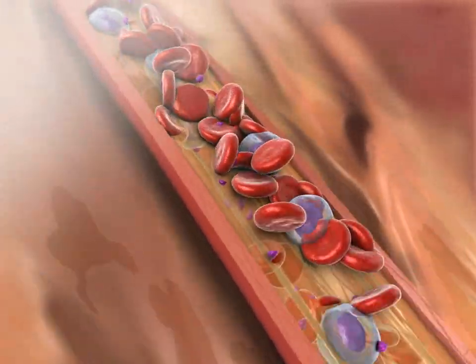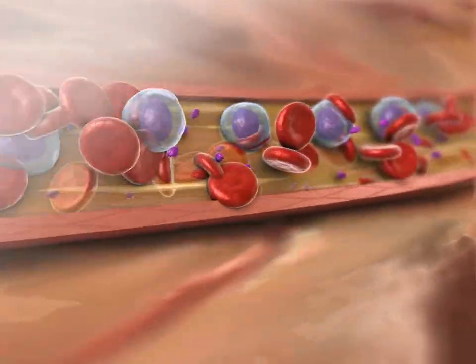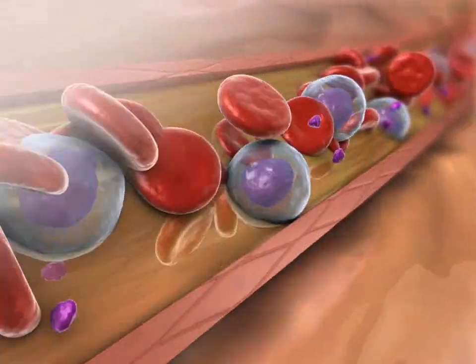The largest component of blood is plasma, a yellowish liquid that is 90% water. Plasma carries suspended blood cells and other substances.